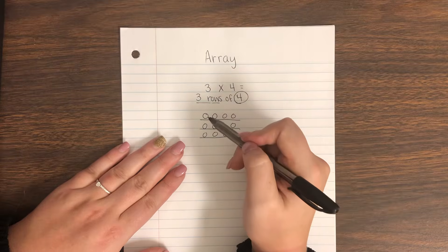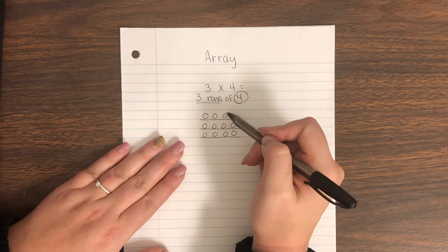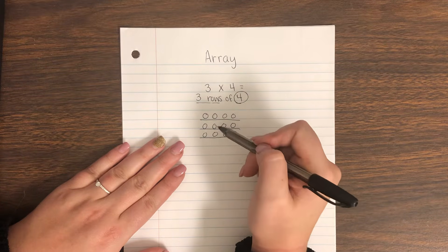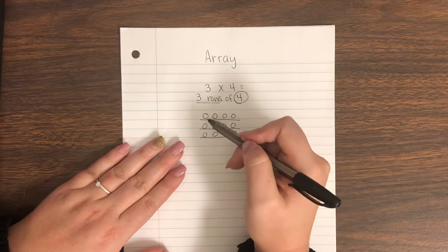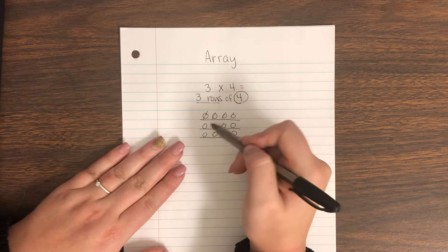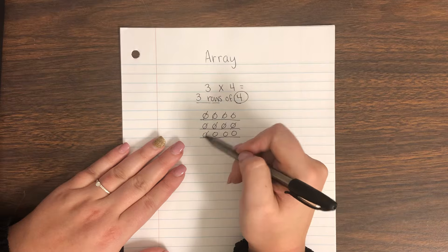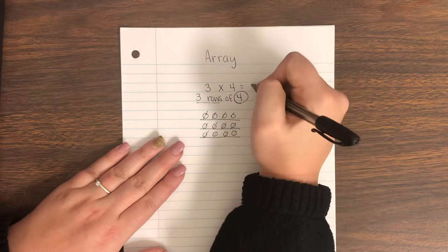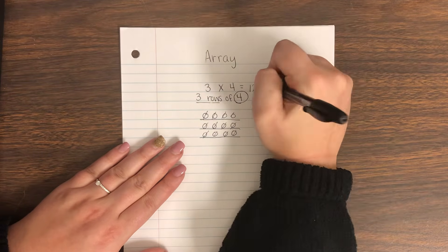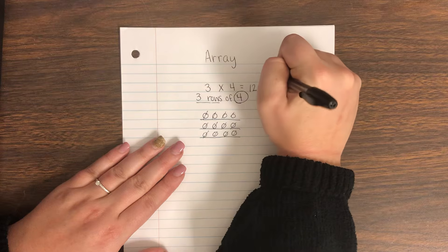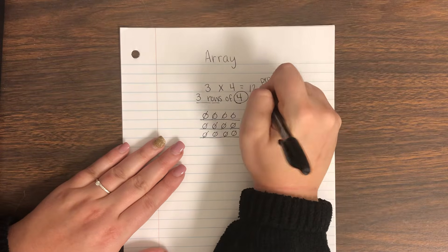To find the answer we are going to mark out these dots until we count them all and get the product: one, two, three, four, five, six, seven, eight, nine, ten, eleven, twelve. So my product here is twelve. Remember, this is called the product because that's our answer — it's our final product.